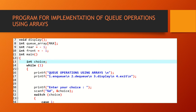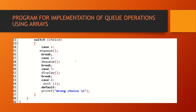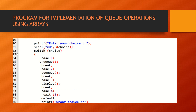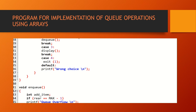int n, int choice — the user has to choose a choice. While(1), at a time only one choice is chosen by the user. printf prints queue operations using arrays, with choices enqueue, dequeue, display, and exit. A user has to enter the choice. Switch statement is used to test the cases — enqueue, dequeue, display, and exit. According to the user's choice, cases are tested. If the user enters any other choice, by default it prints wrong choice.